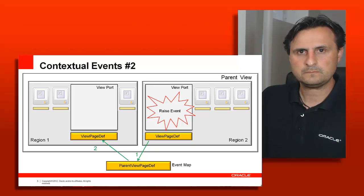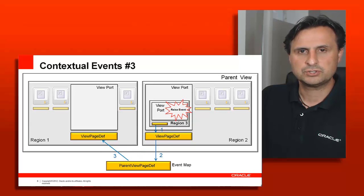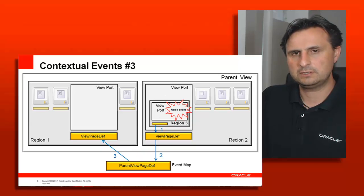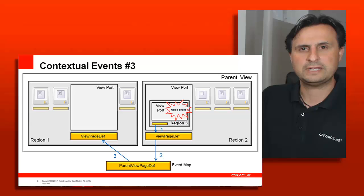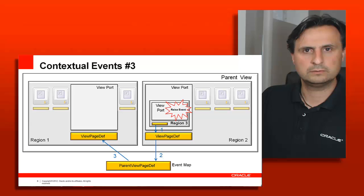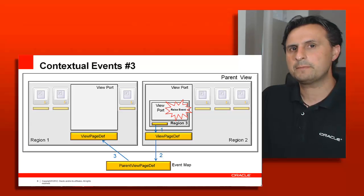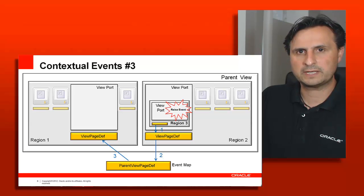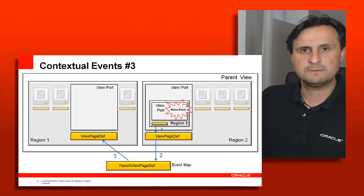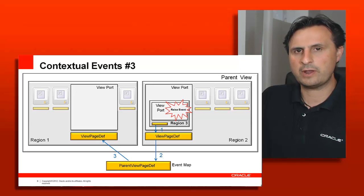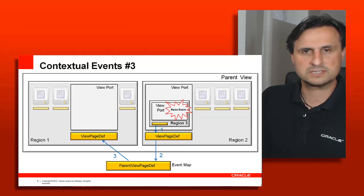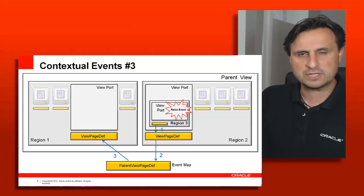The next sample shows a nested region. Here the nested region raises an event, and this event bubbles up and reaches region one where it can be handled. Contextual events can go in both directions, and it's a very powerful mechanism because it can reach many regions at once without requiring a direct dependency through bean injection to establish that communication.